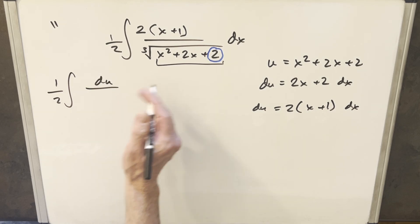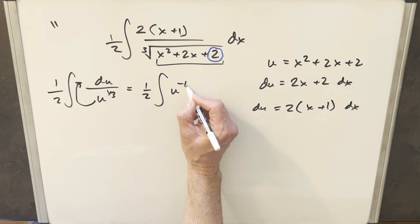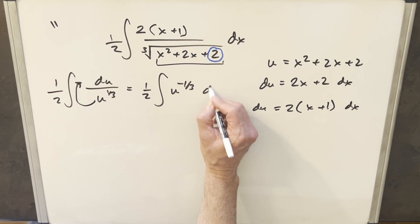And then this is going to be, I'll write this as u to the 1 third. But in reality, I want this in the numerator just to make it clear so I can do power rule on this. So let me just rewrite. So I'm going to have it as 1 half u to the minus 1 third du.